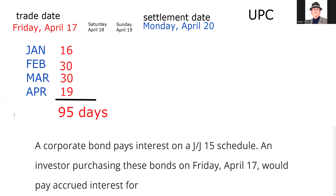So the answer to this question is 95 days. It's low probability that the Series 7 exam will actually ask you to calculate the number of days of accrued interest — every once in a while someone tells me they encountered it — but the recognition of this concept is very testable. Also remember, some bonds trade flat, meaning there's no calculation of accrued interest at all.